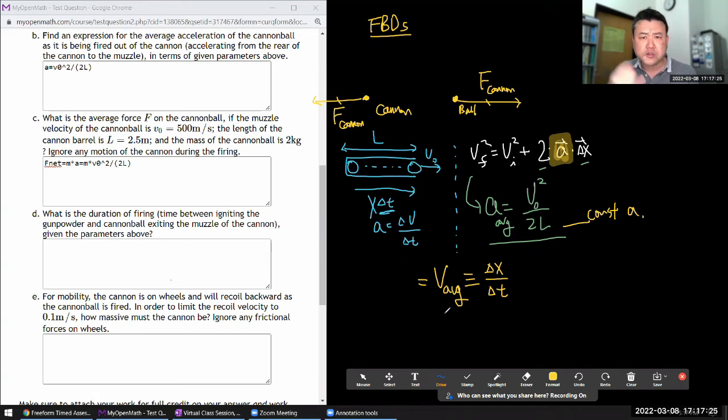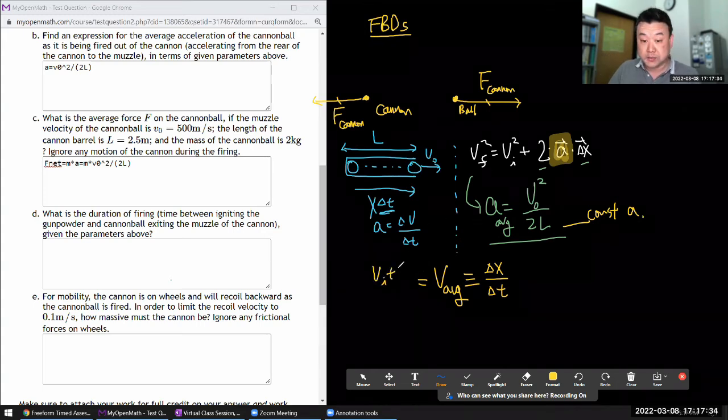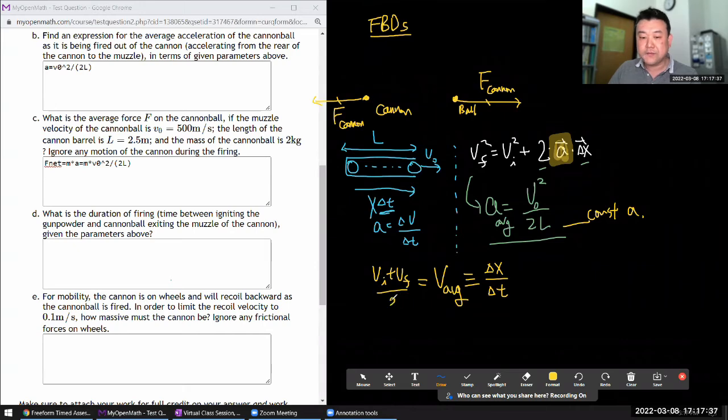You can describe average speed that way, or for situations like this where you are dealing with constant acceleration you can actually say average speed is given by this special formula: initial velocity plus final velocity divided by two. You can see this more easily if you see the velocity as a function of time chart. As long as your velocity is changing in a straight line, this is like taking the area under the curve and dividing it by time.